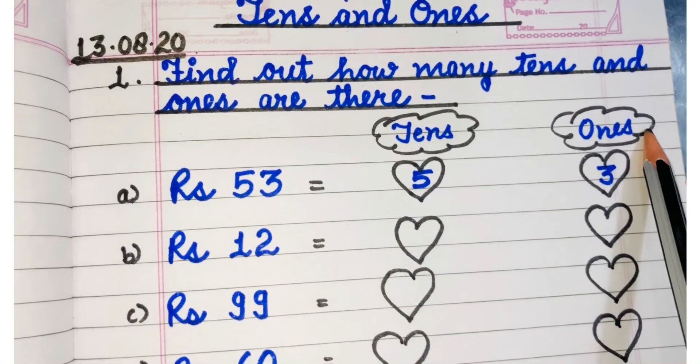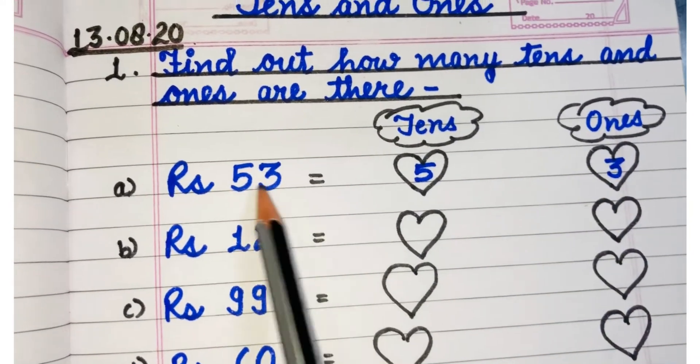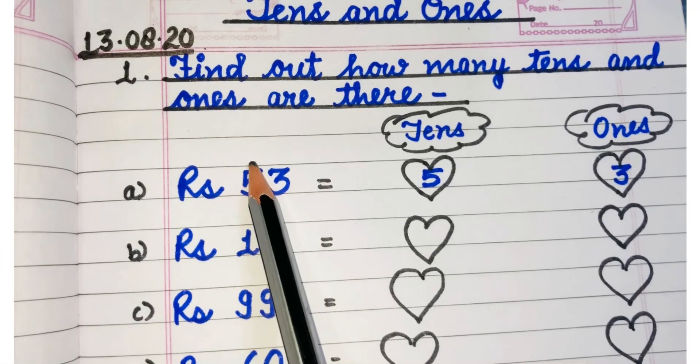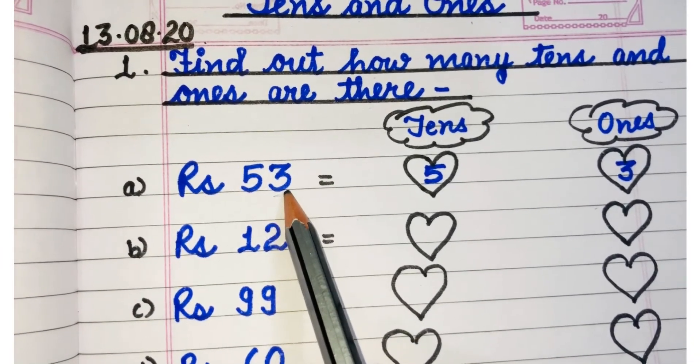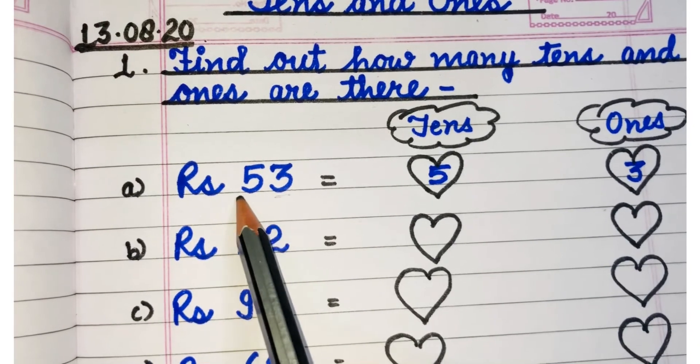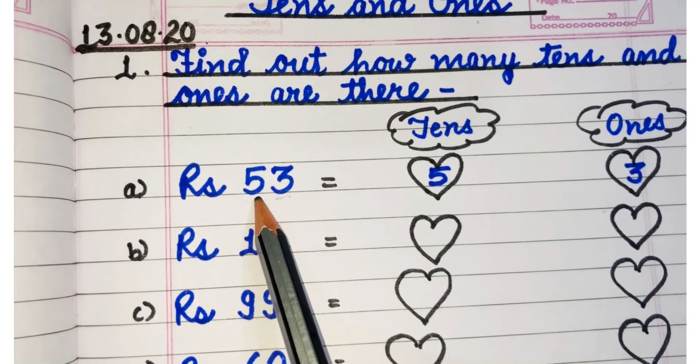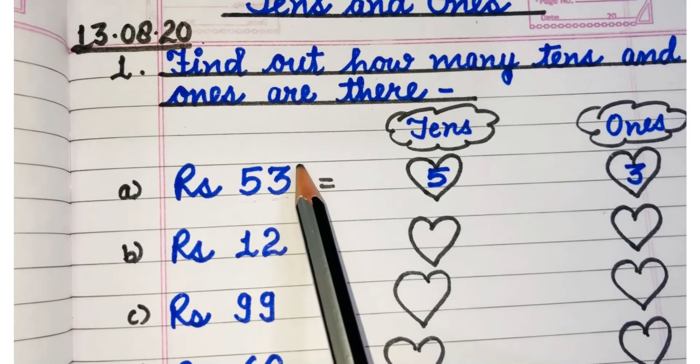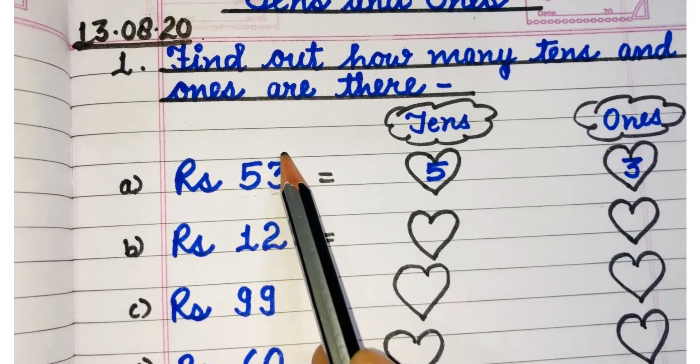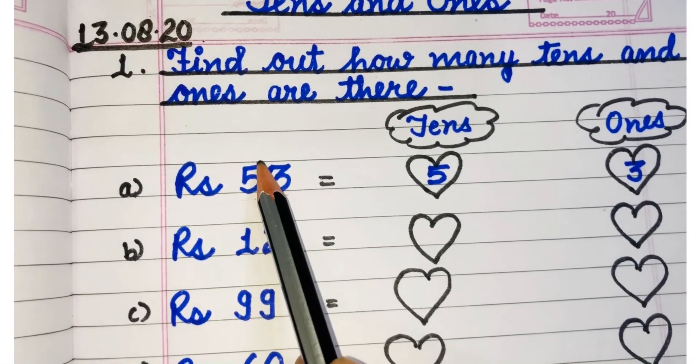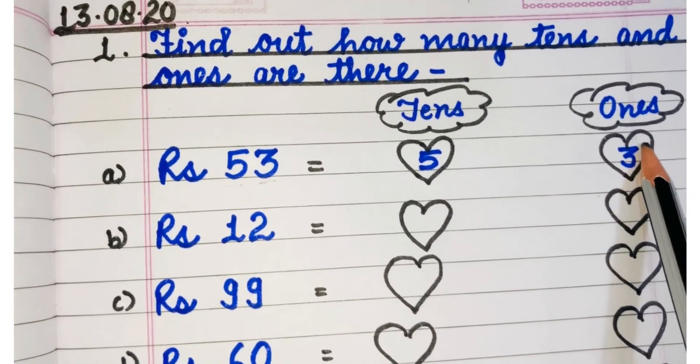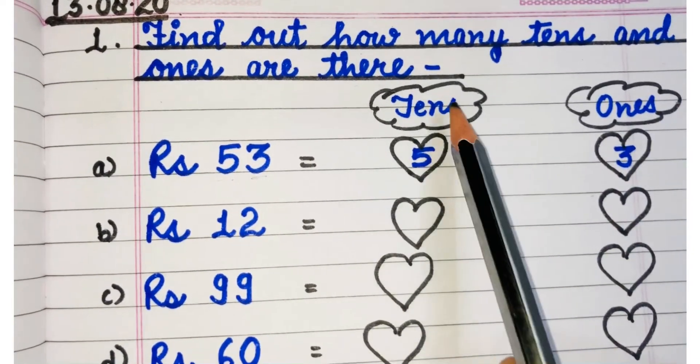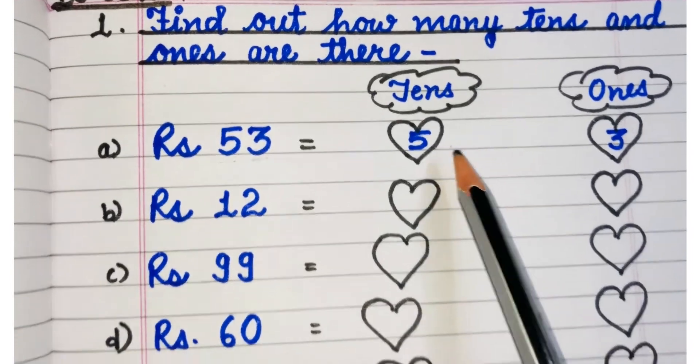So here we have tens and ones separated. This is Rs. 53. Here, 3 is at ones place and 5 is at tens place. So you will write 3 and you will write 5 in the given respective columns. 3 will come under ones and 5 will come under tens.